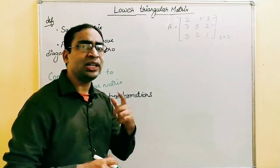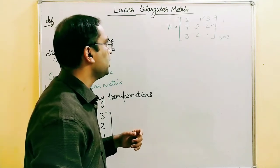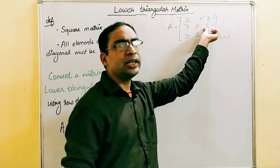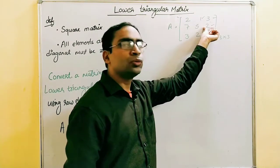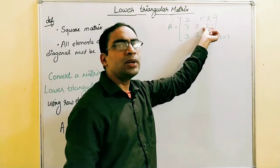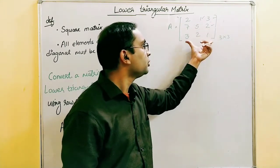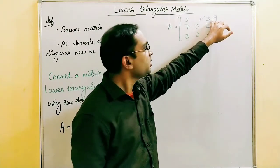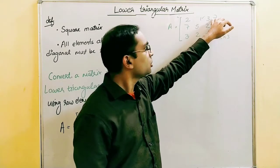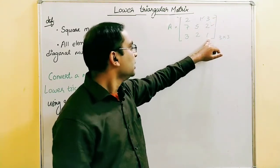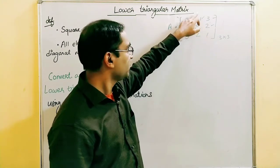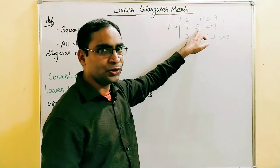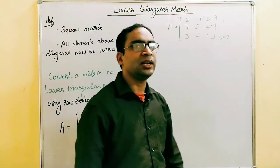Rule number three, similar to what we studied in upper triangular matrix: if we want to convert an element, the column number determines which row to operate with. For example, if we want to convert an element in column number three to zero, it has to be operated with row number three. If the element is in column number two, the operation will be with row number two.